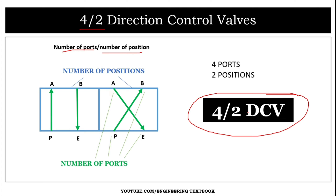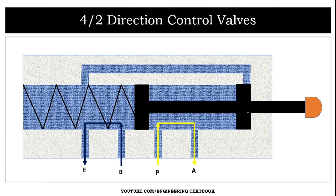Now let's see its operating conditions. Here is the figure of the 4 by 2 direction control valve. It consists of a cylinder and piston arrangement, also known as a spool, a spring, and four ports — A, P, B, E — with a push button. This condition is the normal condition. One important thing: the valve does not have a neutral condition, meaning the ports in the valve are not closed in this condition.